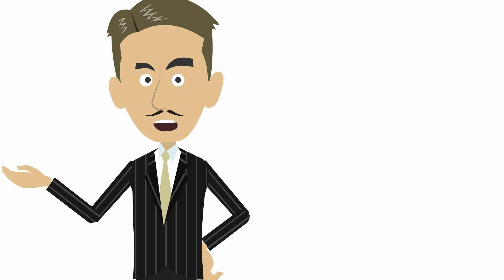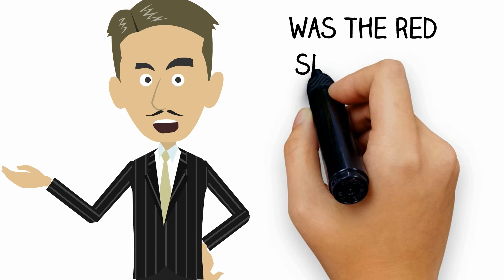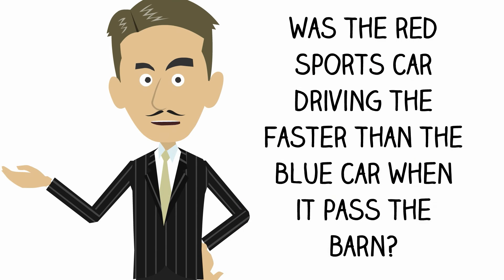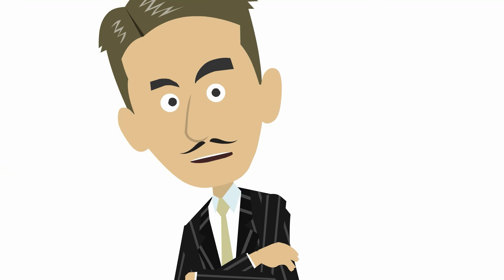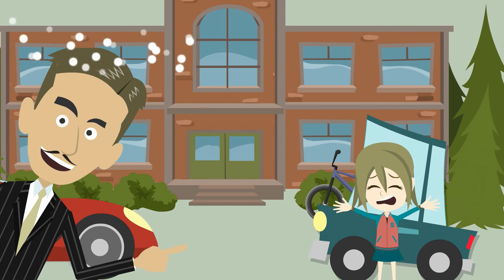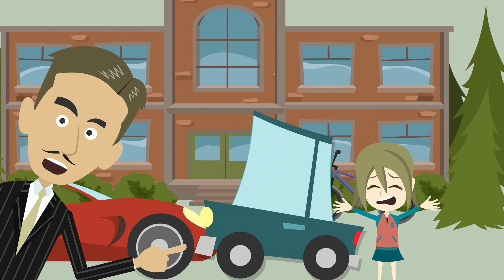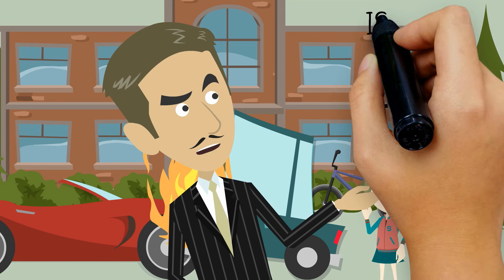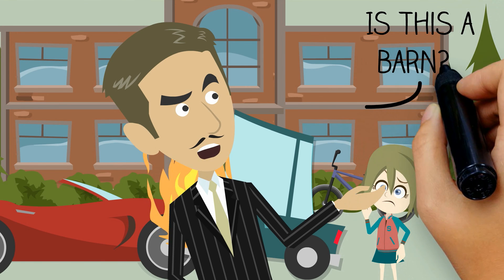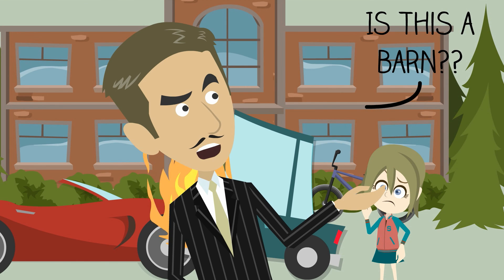Let me ask you a simple question to test if you have been listening and watching attentively. Was the red sports car driving faster than the blue car when it passed the barn while traveling along the road? Was there even a barn in the first place? If you even answered my question about whether the sports car was driving faster or not, not realizing that there was no barn in the first place, you are successfully one of my victims of the misinformation effect.